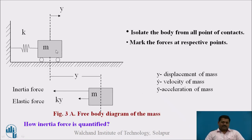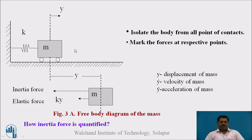Now let us solve this single degree of freedom system. y is the displacement, and the direction of displacement is shown here. To solve this model, we first draw a free body diagram by isolating the body from all points of contact — the spring connects to the base. We then mark the forces at the respective point of contact. The elastic force representing the spring is denoted by k·y, where y is the displacement. An inertia force is also shown, acting opposite to the direction of displacement.